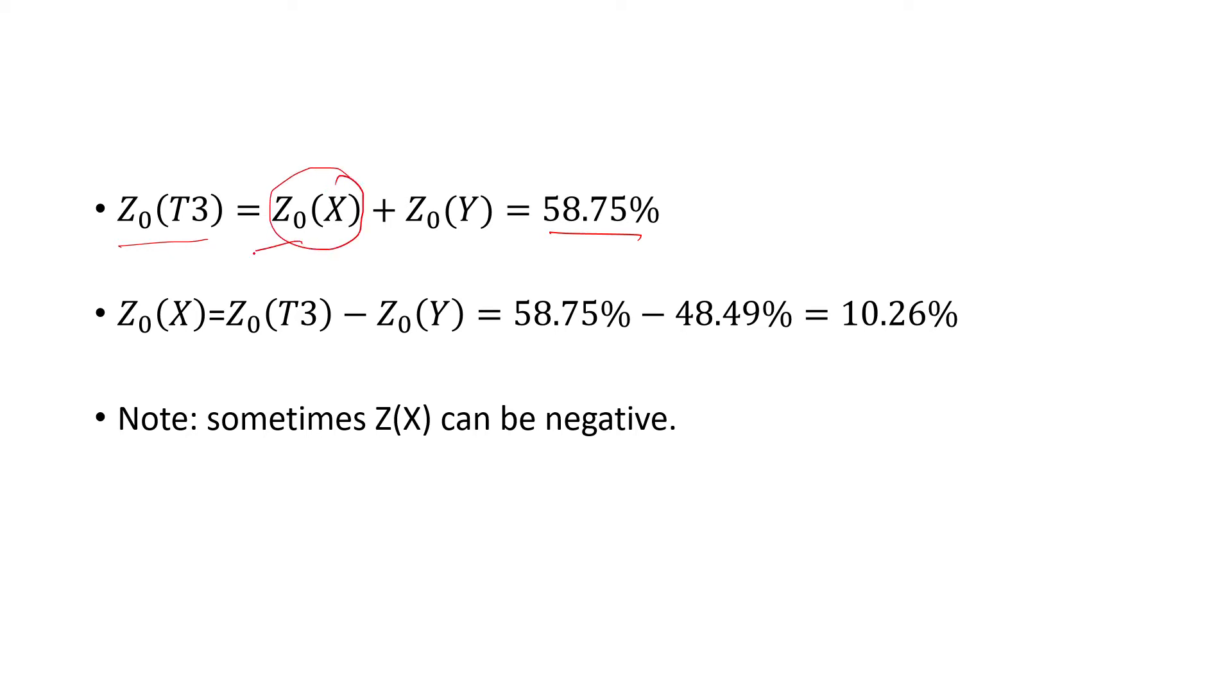just by rearranging this equation here. Plug in the numbers, I get 10.26%. Note, sometimes the zero sequence impedance of the low side can be negative.